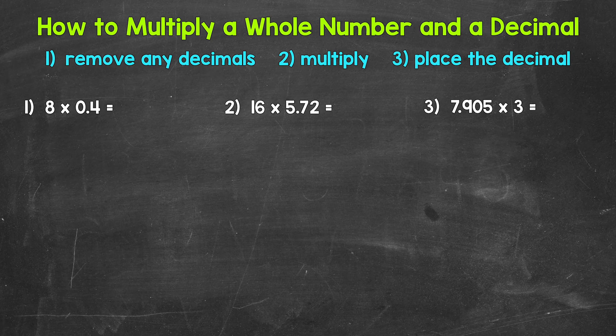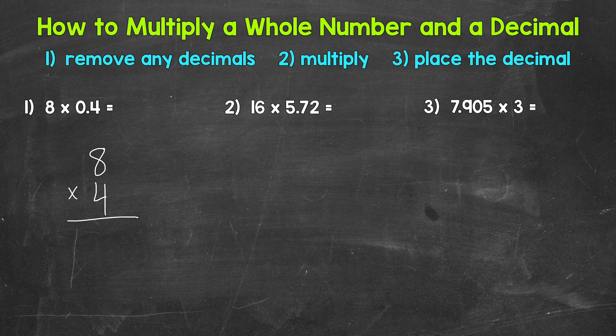Let's jump into number one, where we have eight times four tenths. The first thing we need to do whenever we have a multiplication problem involving any decimals is remove any decimals. So we're going to rewrite this problem as eight times four. Our second step is to multiply.